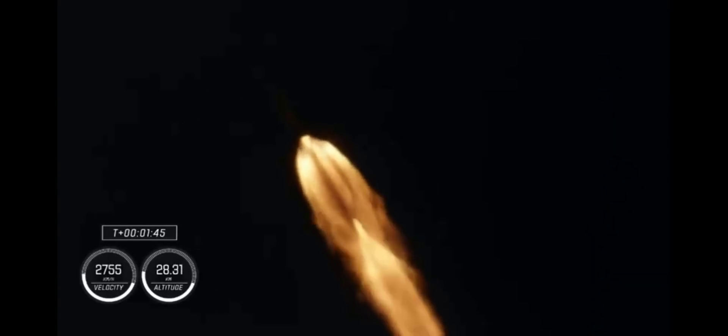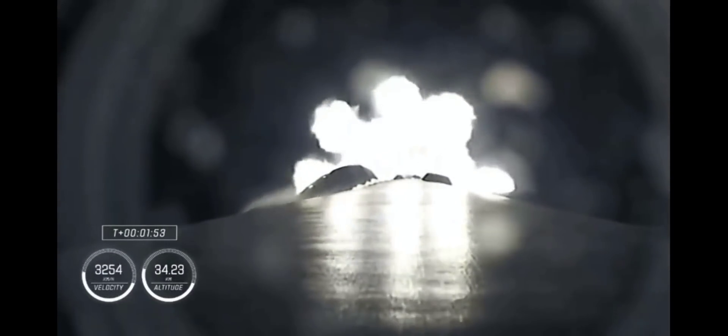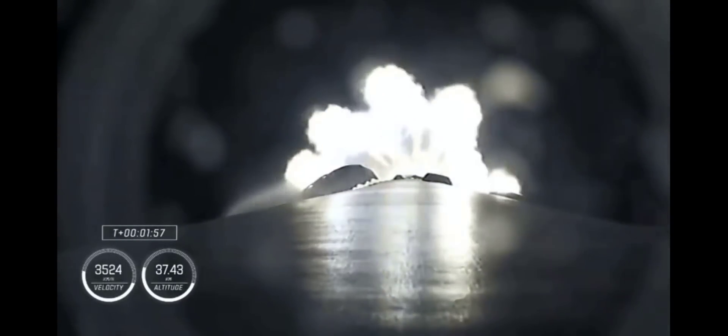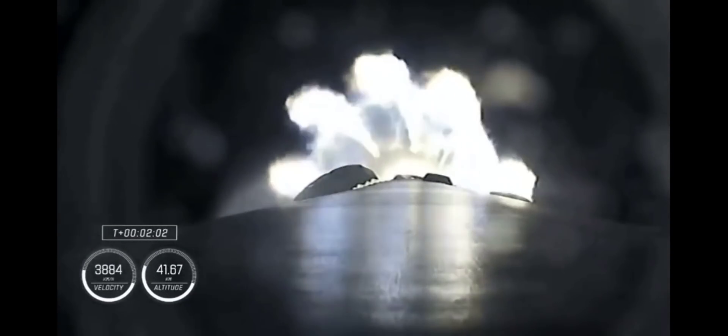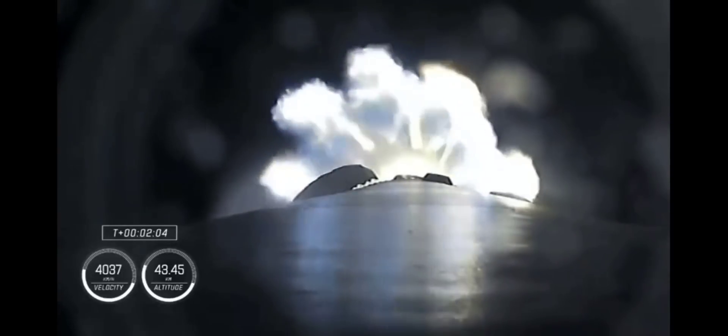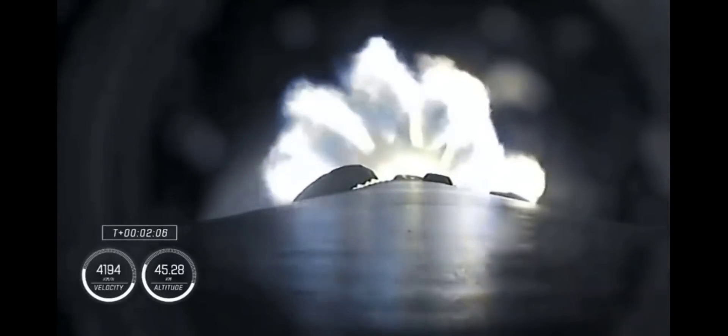T plus 1 minute and 40 seconds into flight. Dragon and Falcon 9 traveling 709 meters per second. That call that MVAC chill is underway, the Merlin vacuum engine. Now with the call out of MVAC D chilling, similar to what we saw in the first stage Merlin engines, the second stage engine being prepared for its ignition coming up in just over 30 seconds.